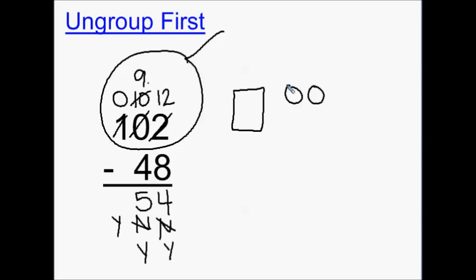I am going to make more tens by ungrouping my one hundred box. I cross off my one hundred, and now I have ten tens.